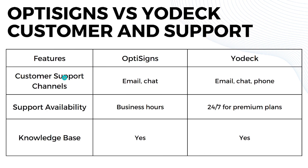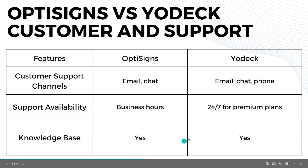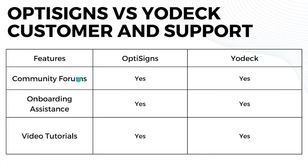Now for customer and support comparison. For support channels, OptiSigns offers email and chat support, while Yodeck has email, chat, and phone support. For availability, OptiSigns is available only during business hours, while Yodeck offers 24/7 support for premium plans. Both platforms have a knowledge base, so that's not a concern.